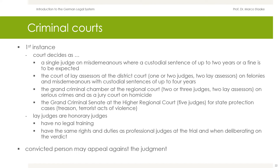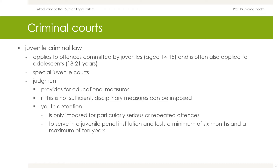The grand criminal senate decides at the higher regional court with five judges on cases for state protection crimes such as treason and terrorist acts of violence. Lay judges are honorary judges — they have no legal training but have the same rights and duties as professional judges at the trial when deliberating on the verdict. A convicted person may appeal against the judgment. The juvenile criminal law applies to offenses committed by juveniles aged 14 to 18, and is also often applied to adolescents aged 18 to 21.